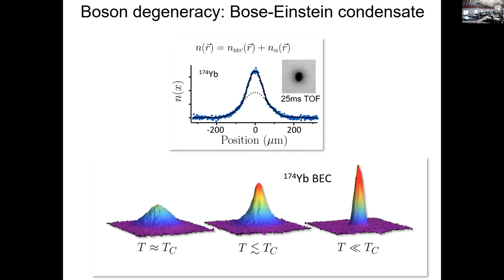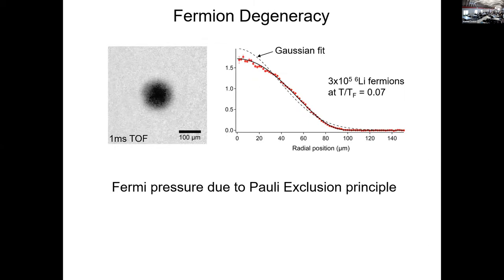So in our case, we're using ytterbium bosons, and we also have fermionic systems. So in our case, we use lithium fermions, and here you see another of these absorption images analyzed in a way where we use the Fermi-Dirac distribution function to assess what the temperature of the system is. It's something like 7% of the Fermi temperature.